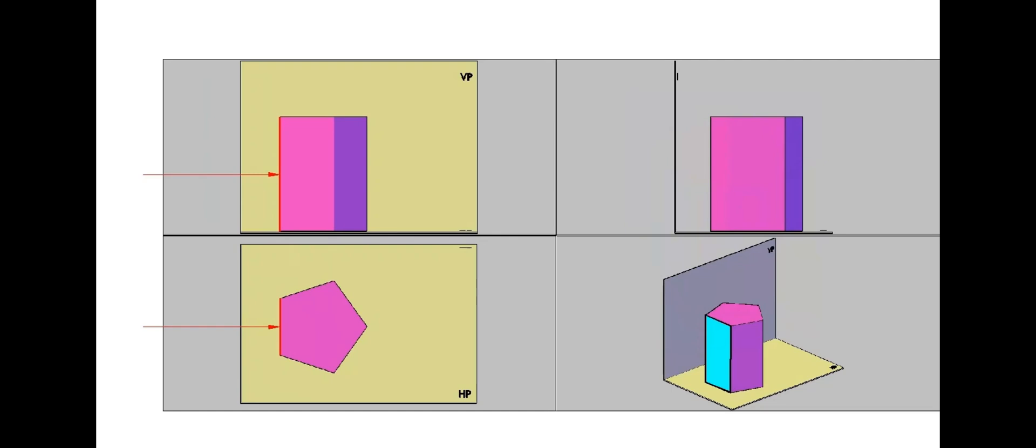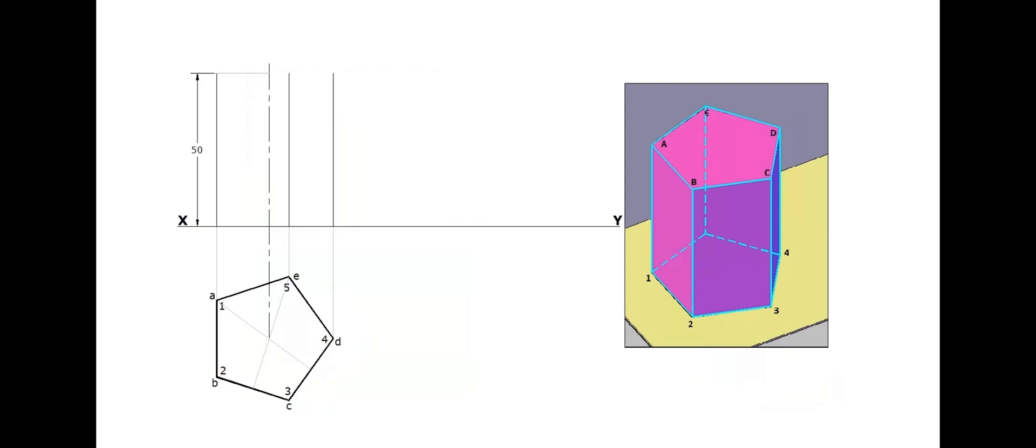Now, this rectangular phase is perpendicular to both HP and VP. So this rectangular phase can be seen as a line in both the top view and front view.